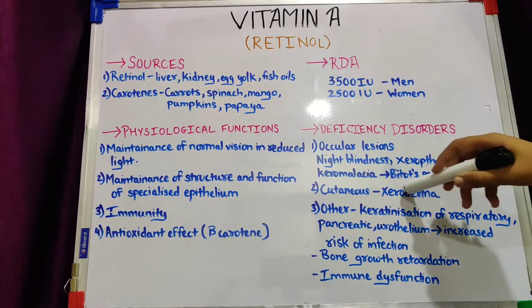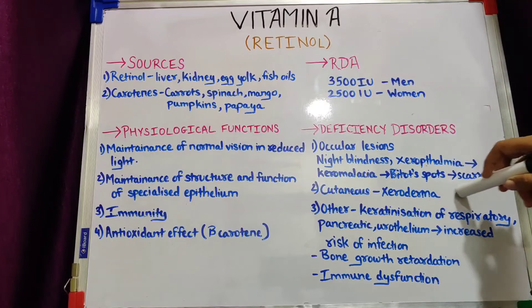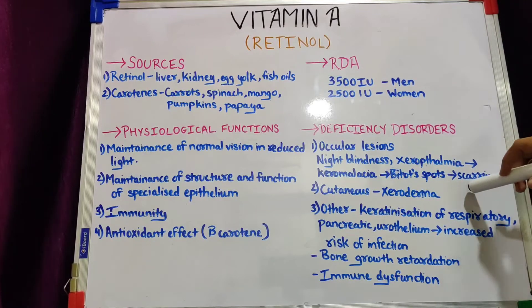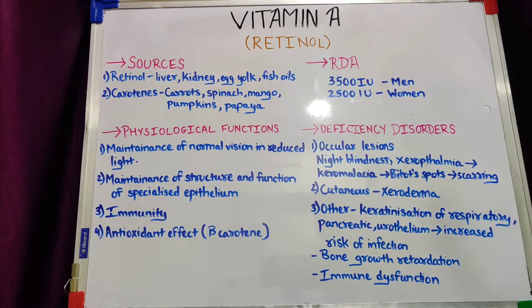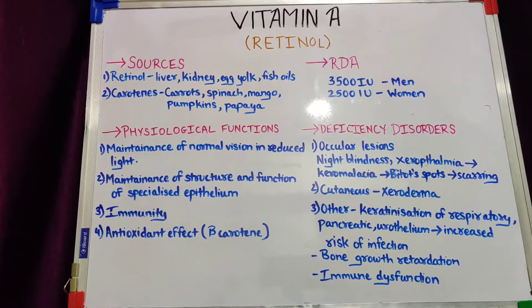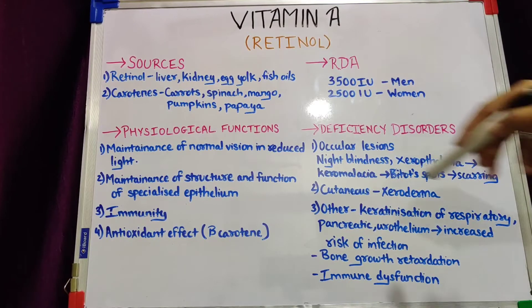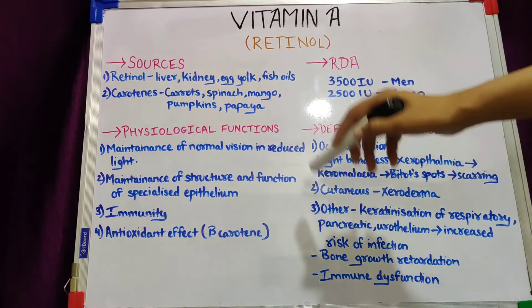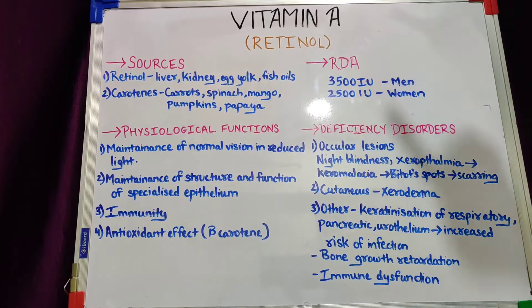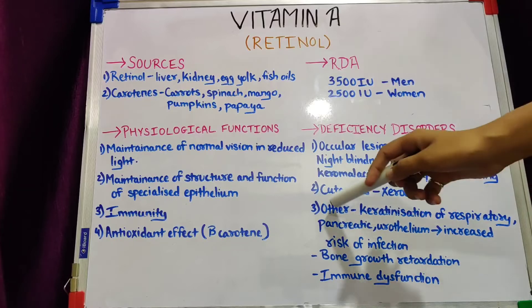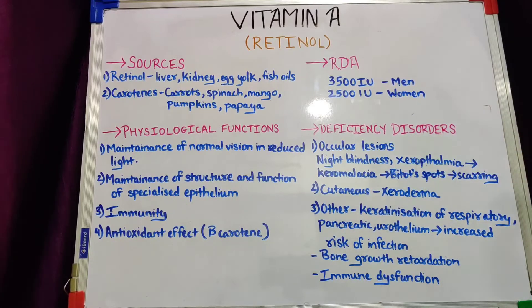If this is not treated in time, it goes on to scarring, which may further result in permanent blindness. These are the ocular lesions of vitamin A deficiency.